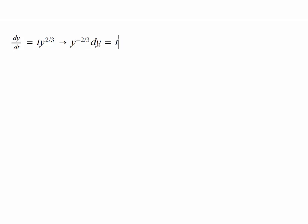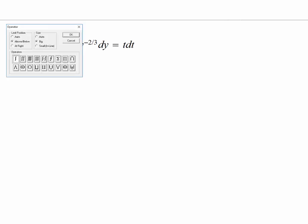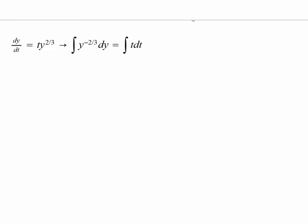And we can integrate both the sides. And what shall we have? Here we got integral of this quantity, then that of t. So what you will have is, just use the power rule, so you will have three times y to the one-third equal to t squared over two, right? So we have t squared over two plus a constant c.